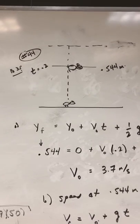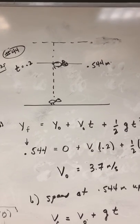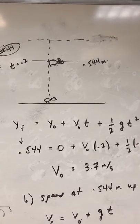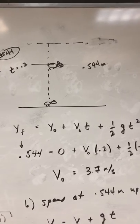This is problem 44 on page 35. An armadillo is startled and he jumps straight up, and at 0.2 seconds he achieves a height of 0.544 meters above the ground.